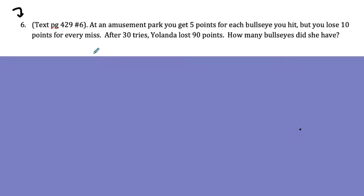We're writing and solving a system of equations. At an amusement park you get five points for each bullseye you hit but you lose ten points for every miss. After 30 tries Yolanda lost 90 points. How many bullseyes did she have?